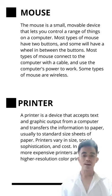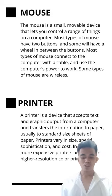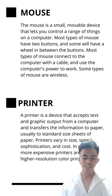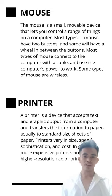Some types of mouse are wireless. Next is the printer. A printer is a device that accepts text and graphic output from a computer and transfers the information to paper, usually standard-sized sheets of paper. Printers vary in size, speed, sophistication, and cost. In general, more expensive printers are used for higher resolution printing.